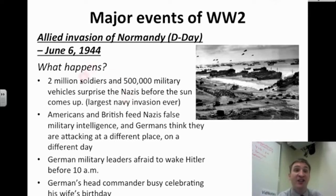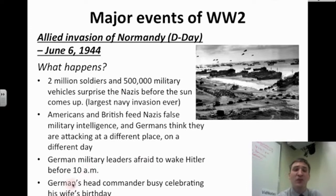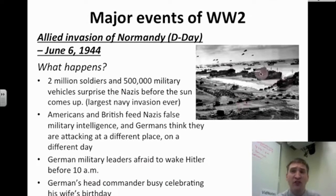What happens on D-Day? Two million soldiers and 500,000 military vehicles surprise the Nazis before the sun comes up — it's the largest naval invasion in the history of the world. Americans and British feed the Nazis false military intelligence, so the Germans think they will be attacked at a different place on a different day. German military leaders are afraid to wake Hitler before 10 a.m., and Germany's head commander is busy celebrating his wife's birthday. The Nazis are totally taken by surprise.